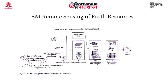This is followed by data analysis, where the data obtained by the sensors is analyzed and interpreted either visually or digitally depending on the type of data. Visual interpretation is done for pictorial data, while digital image processing is carried out for digital data. After due analysis, the information products are released and can be passed on to users or integrated with geographical information systems.